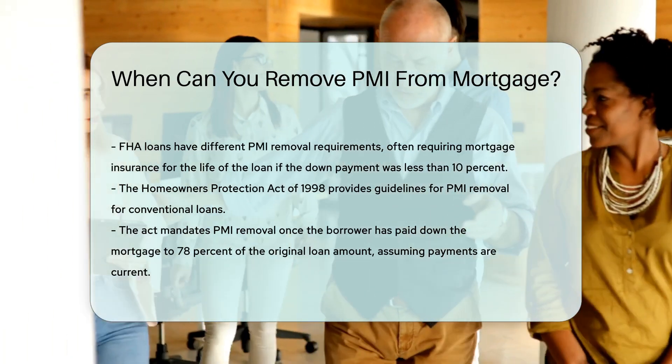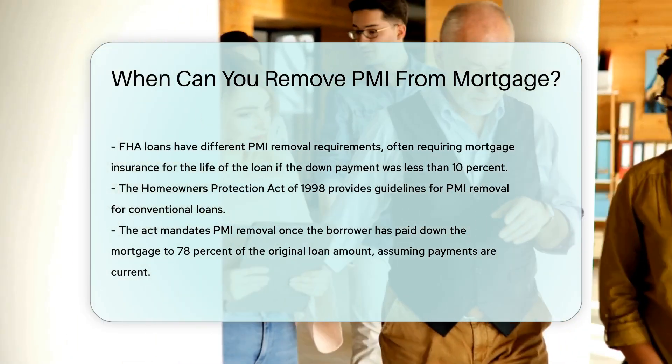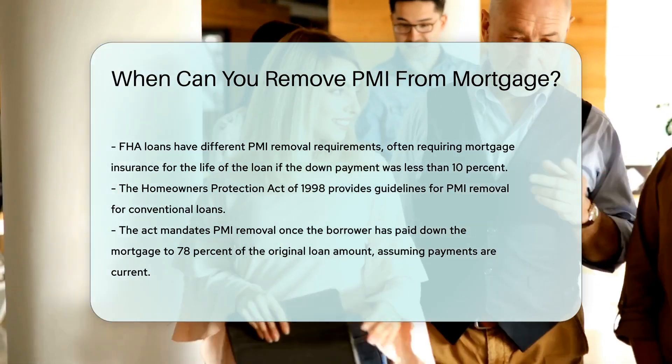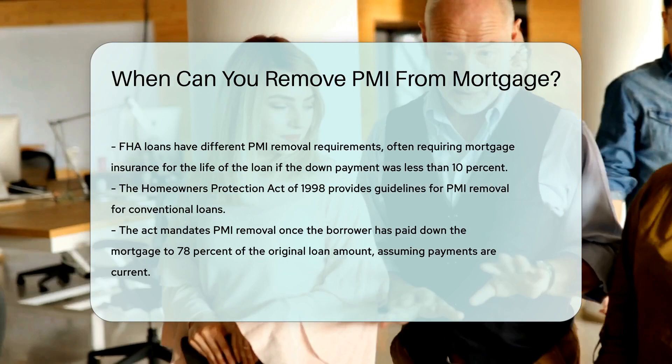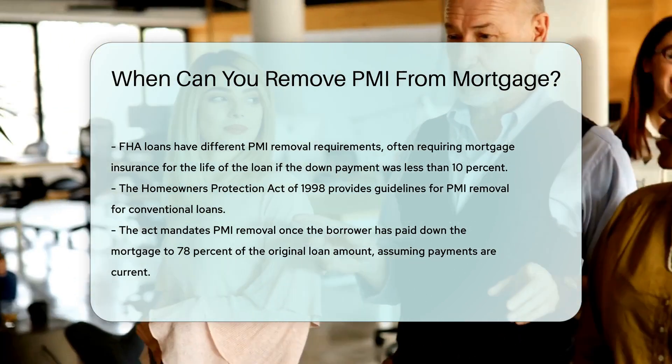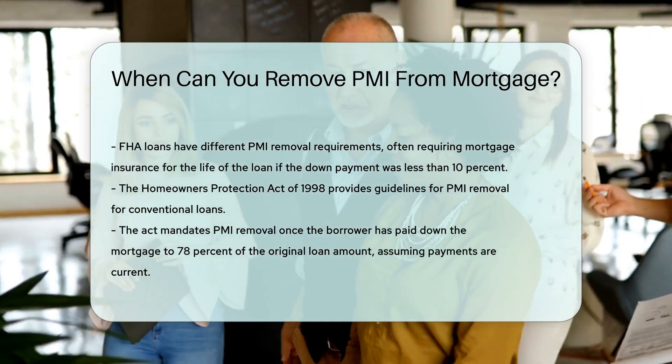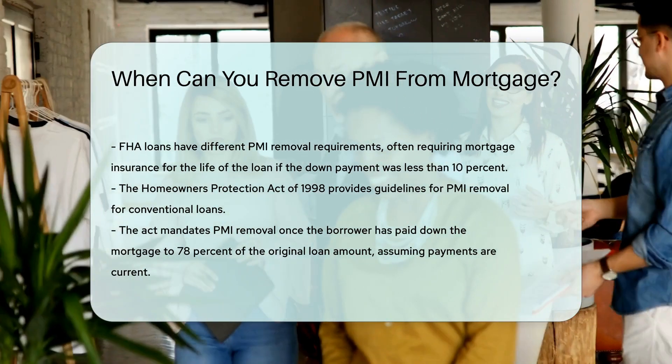This act mandates that PMI must be removed once the borrower has paid down the mortgage to 78% of the original loan amount, assuming payments are current.